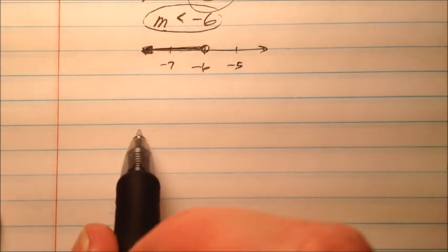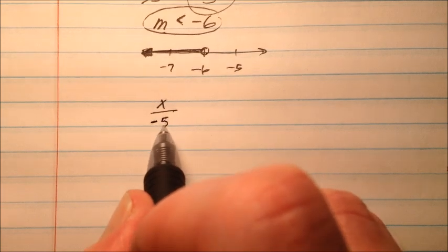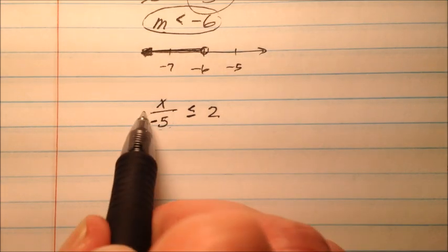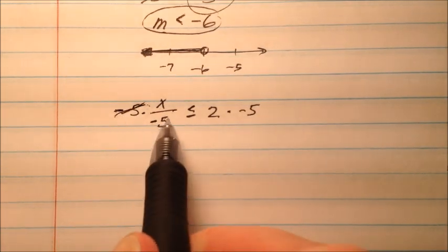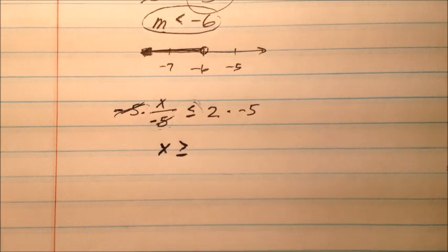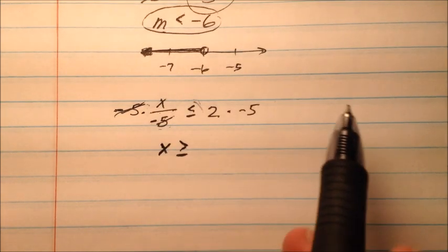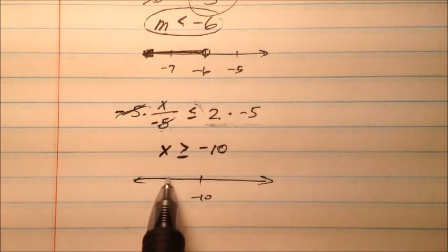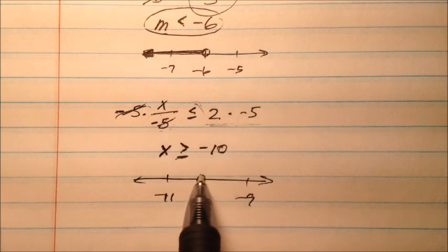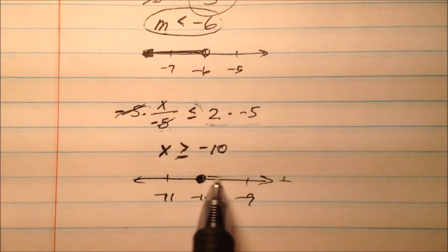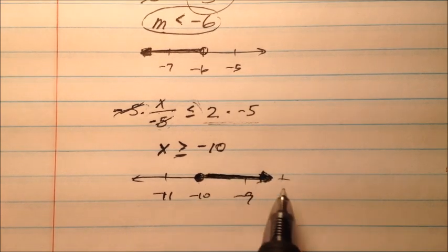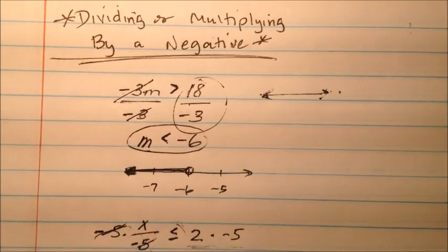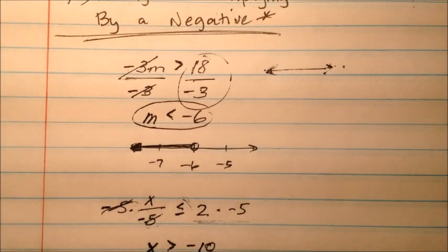What if you have x divided by negative 5 is less than or equal to 2? Since x is being divided by negative 5, we multiply both sides by negative 5 to undo that. This multiplication by a negative causes the sign to flip — instead of going to the left, it flips to the right. The right side becomes negative 10. It's equal to it, so we use a closed circle at negative 10, and since it's now greater than or equal to, we shade to the right. When solving one-step inequalities, if you multiply or divide by a negative, flip the sign. Adding and subtracting won't change the direction.